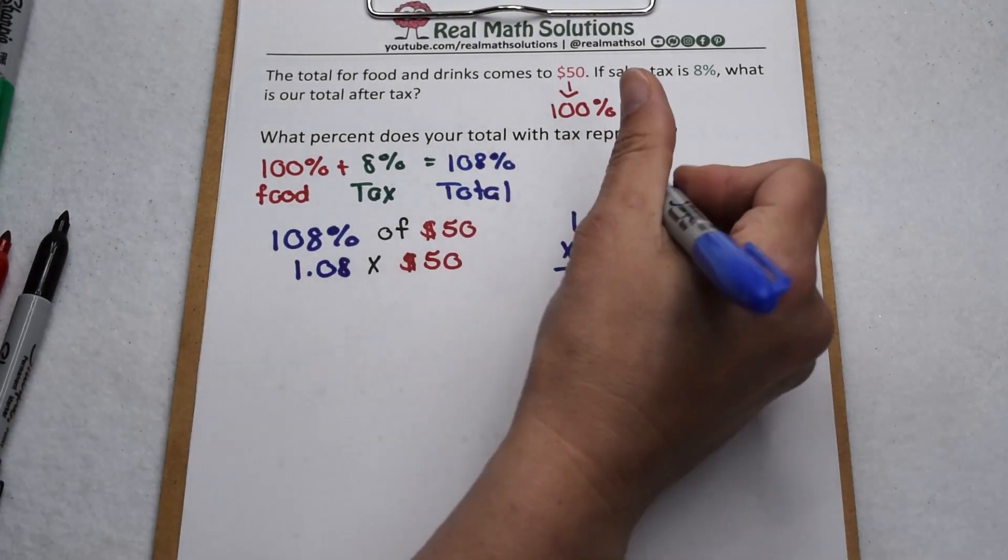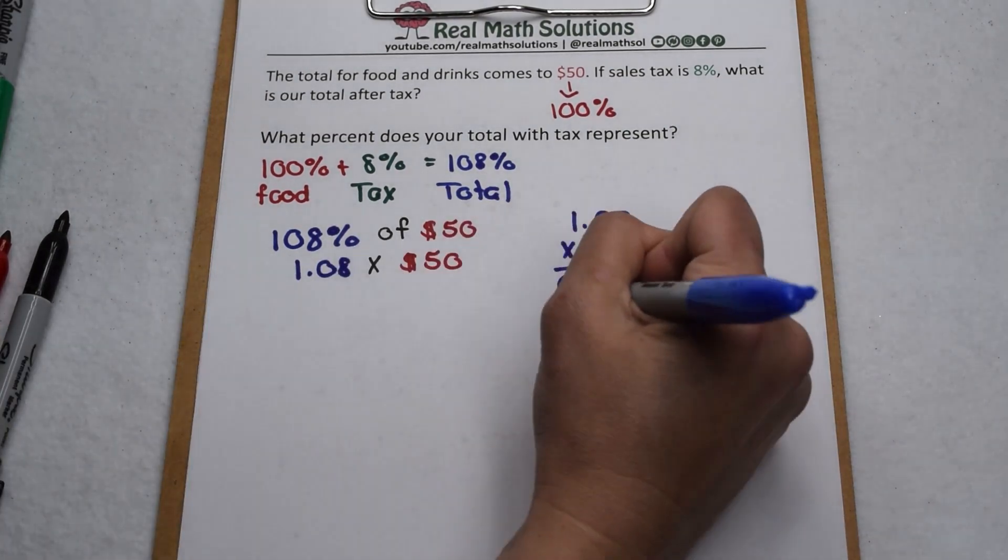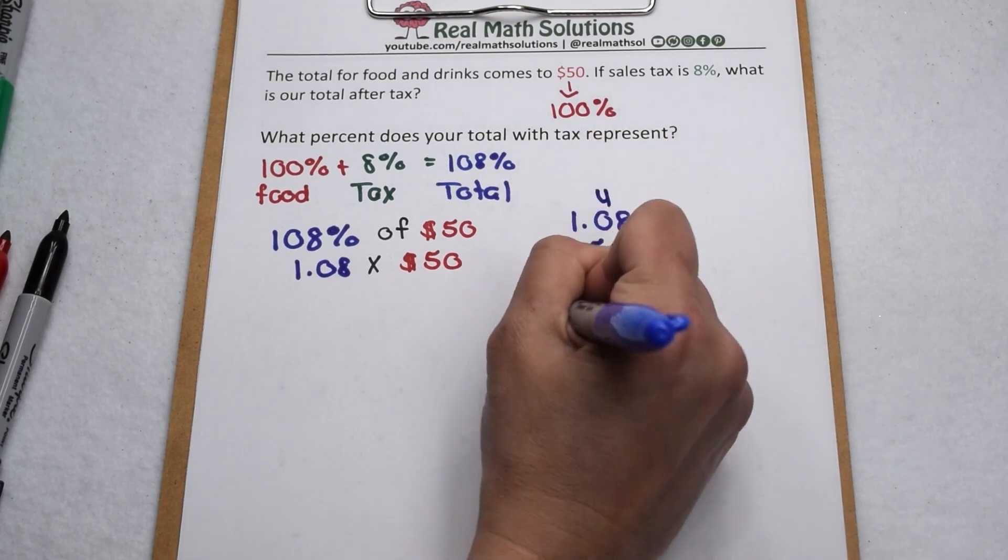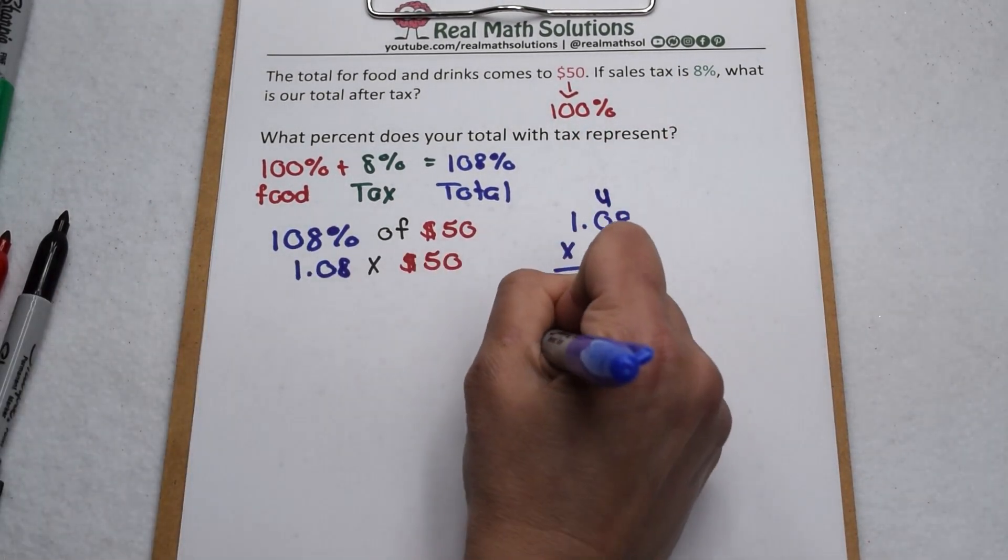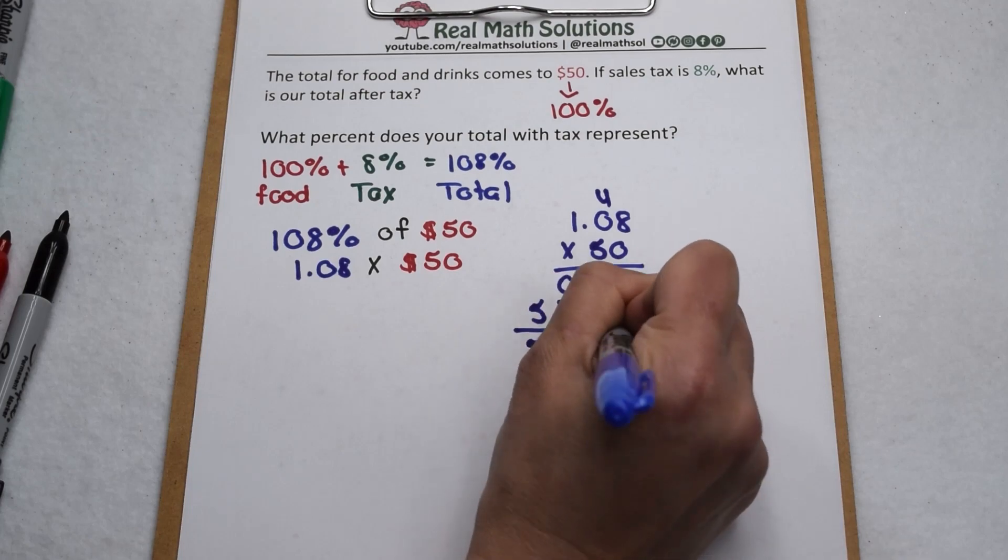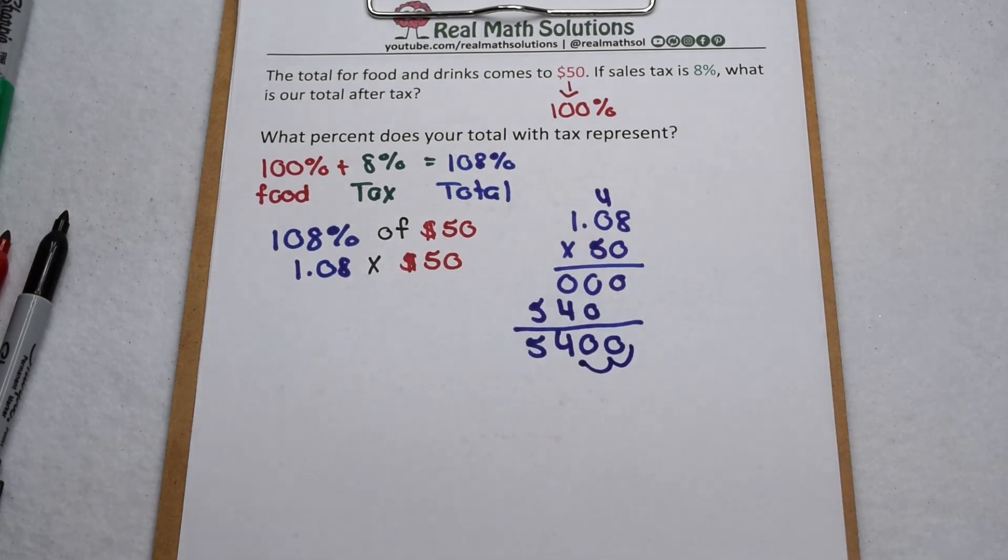When we multiply that out, 8 times 0 is 0, 0 times 0, 1 times 0 is 0. Go on to our next row, 8 times 5 is 40. Carry my 4, bring that down. 5 times 1 is 5. So when we add those together, that's going to come out to be 5,400. Two decimal places in my factor means I'm going to have two decimal places in my product.